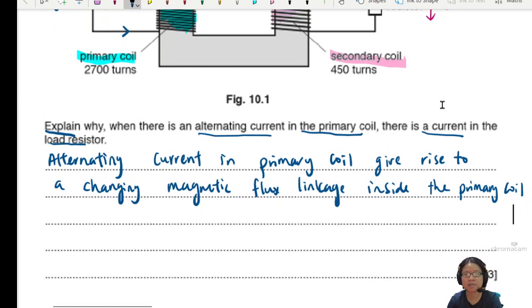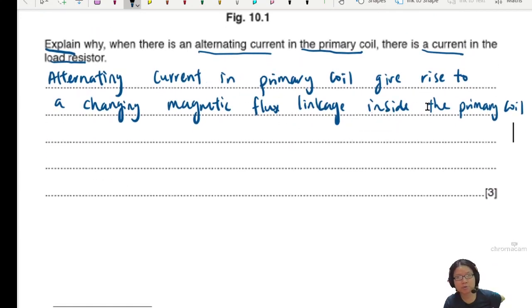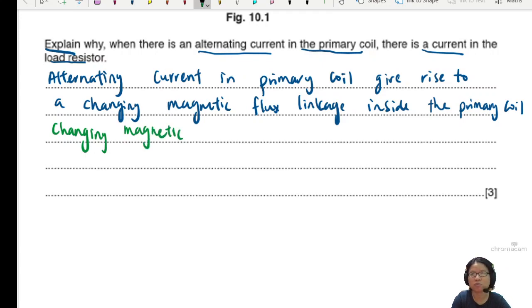If not, you just say coil, they can just say, is it secondary? No, no, no. This is still primary. Alternating current in primary coil give rise to a changing magnetic flux inside the primary coil. Now it's time to talk about the core because the primary coil is linked to the secondary coil by the soft iron core.